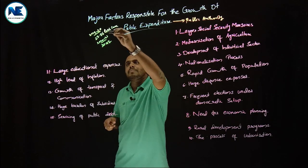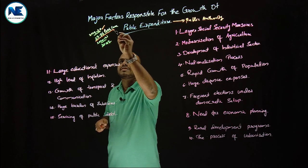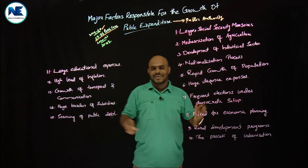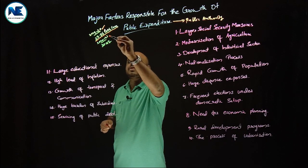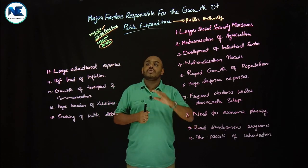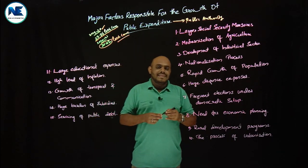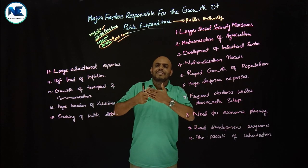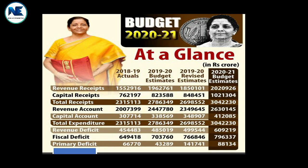Let me show you a brief example from the union budget. The estimated public expenditure for 2019-20 was 27.86 lakh crore — a big amount. For 2020-21, the estimated expenditure is 30.42 lakh crore — also a very big amount. If you compare the expenditure of the government from 1950-51 to the present era, you can see the tremendous growth of public expenditure. Let me explain the major factors responsible for this growth.